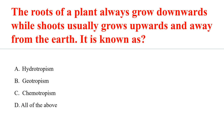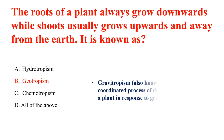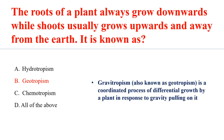The phenomenon where the roots of a plant always grow downward while shoots usually grow upward and away from the earth is known as geotropism. Gravitropism, also known as geotropism, is a coordinated process of differential growth by a plant in response to gravity pulling on it.